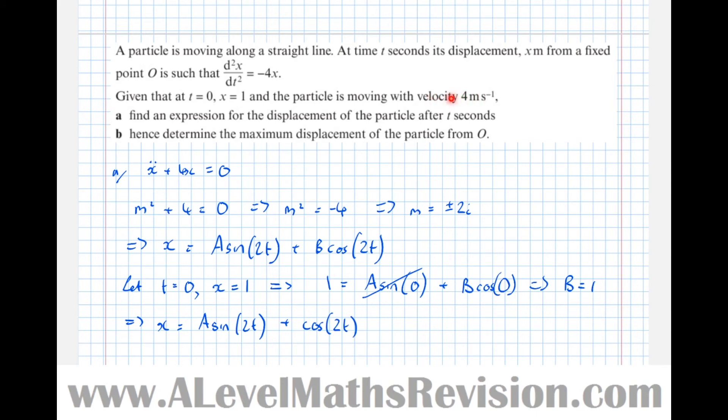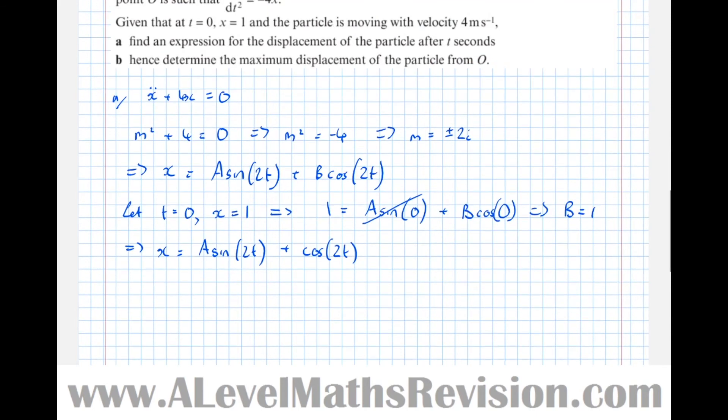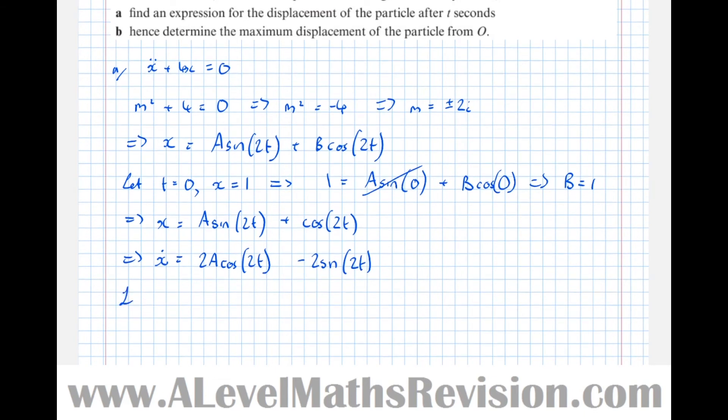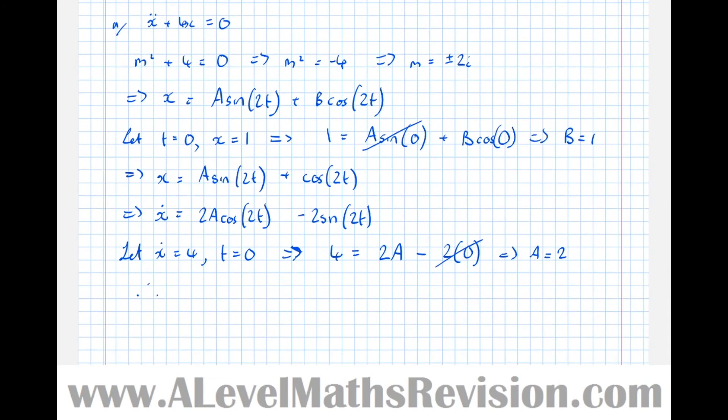We're also told that the velocity is 4 when the time is 0. If we differentiate that, x dot equals 2a cos of 2t minus 2 sine 2t. I'm going to let x dot equal 4 and t equals 0, which means that 4 equals 2a times 1 take away 2 lots of 0, which means that a equals 2. Therefore the particular solution is x equals 2 sine 2t plus cos of 2t.